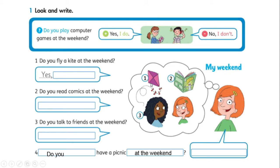Do you fly a kite at the weekend? Sí, ella lo hace — miren la imagen número uno: 'Yes, I do.' Do you read comics at the weekend? Puedo ver en la imagen que sí — debo escribir la respuesta afirmativa. Number three: do you talk to friends at the weekend? Aquí aparece conversando con su amiga, por lo tanto la respuesta es afirmativa. Number four: do you have a picnic at the weekend? ¿Pueden ver si ella sale de picnic? No, cierto — entonces tu respuesta debe ser negativa: 'No, I don't.'